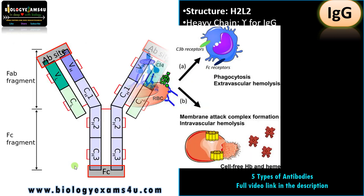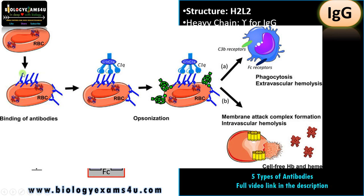IgG also fixes complement. Suppose this is an infected RBC — IgG can directly bind to epitopes on this infected cell, leaving the FC region free. There are many serum proteins that act in cascade, called the complement system. These complement proteins interact with the FC region and activate many other proteins downstream, ultimately either enhancing phagocytosis or directly causing disruption of the membrane through formation of a membrane attack complex, causing the destruction of the infected cell.